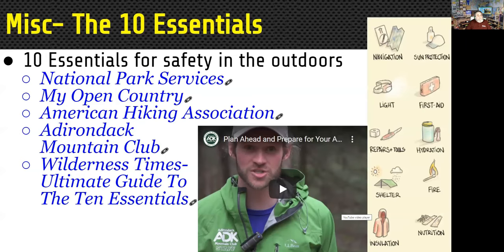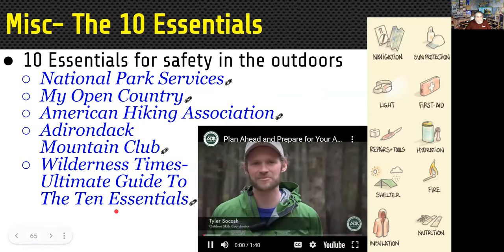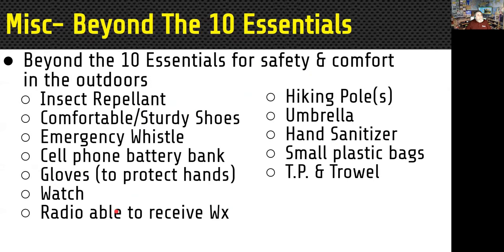When going out in the field, you have to bring non-radio things — called the 10 Essentials. Anyone who does hiking or camping probably knows these: navigation, sun protection, light, repairs and tools, hydration, shelter, fire, insulation, and nutrition. Beyond the 10 Essentials, insect repellent is critical — I operated Field Day in Montana one year, covered myself in repellent, and they bit me under the eyelids, in the ears, and under my fingernails. I probably should have had netting around me.